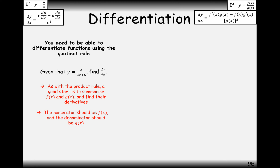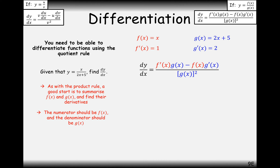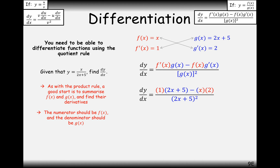A nice place to start is to write out f(x) equals x, the numerator. Differentiate that and you get 1. The g(x) function is 2x + 5; differentiate that and you get 2. Then apply the quotient rule: it's going to be 1 times (2x + 5) minus x times 2, all divided by the g(x) function squared — (2x + 5) all squared.